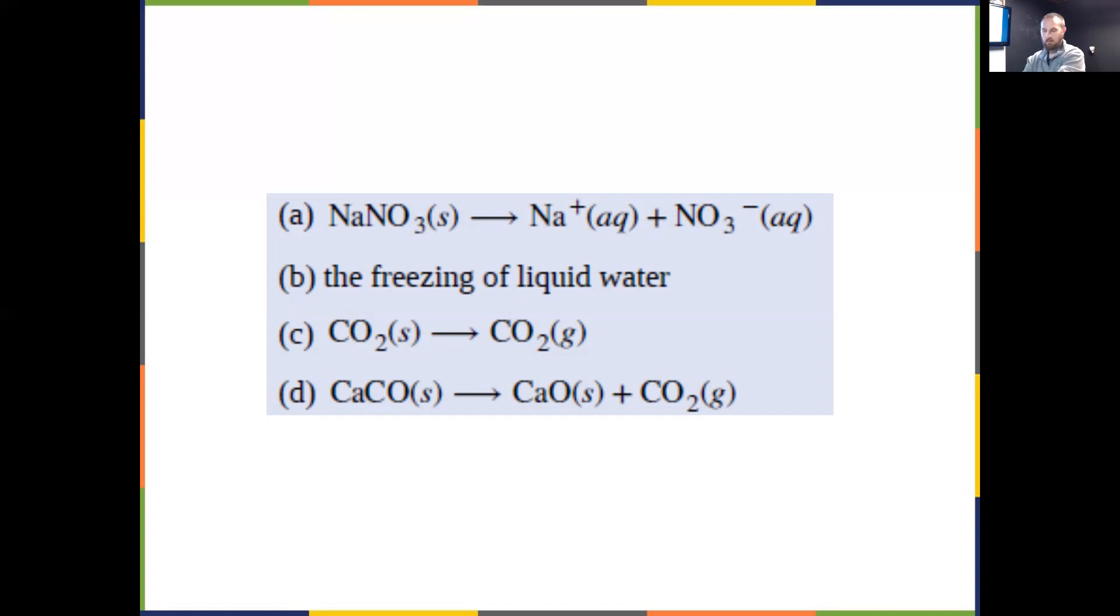Example C shows sublimation of CO2, dry ice going from solid to gaseous carbon dioxide. Phase changing from solid to gas, more random, increased entropy, spontaneous. If you've had a cooler of dry ice, you've seen that firsthand. Lastly, CaCO3 going to CaO plus CO2 is a decomposition reaction. I had a solid making a solid and a gas - more things and went from solid to making some gas, so entropy increased, a spontaneous process.